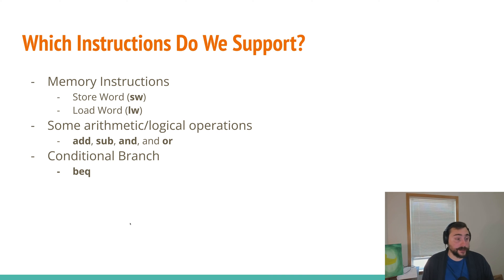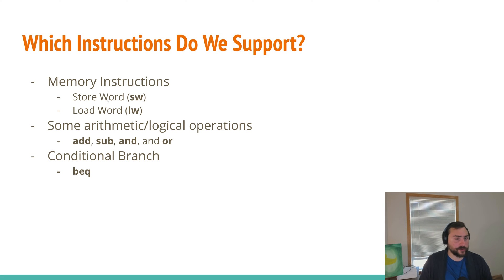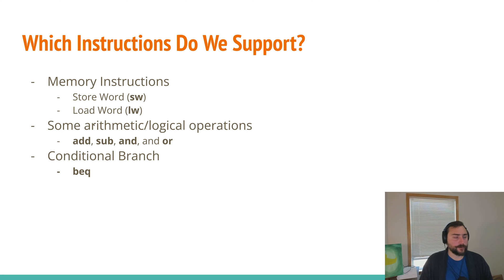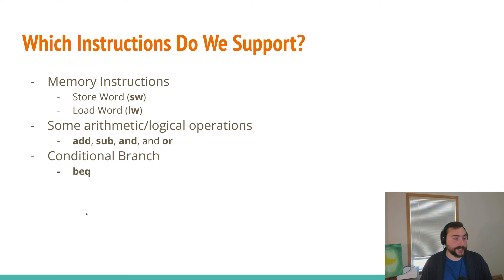Which instructions do we exactly support inside of this architecture? We support a couple of memory instructions: store word and load word, so we can store things out into memory and load them from memory into our registers. We support some arithmetic and logical operations — additions, subtraction, and an OR. And then we also support a branch instruction: branch if equal, so we'll go to some branch target if two values in our registers are equal to each other.